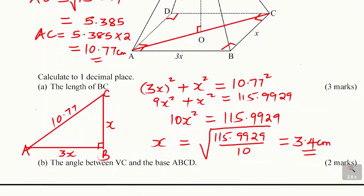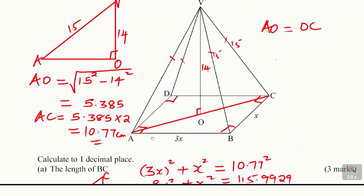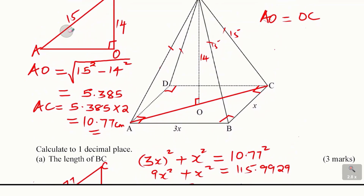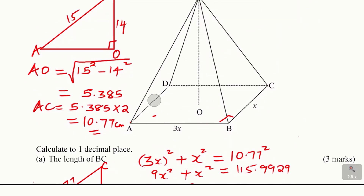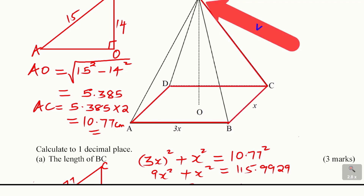Part B: the angle between VC and the base ABCD — that is, the angle between the line VC and the plane ABCD. To get the angle between a line and a plane, we find the angle between the line and its projection onto that plane. The projection of VC onto the base is CO.